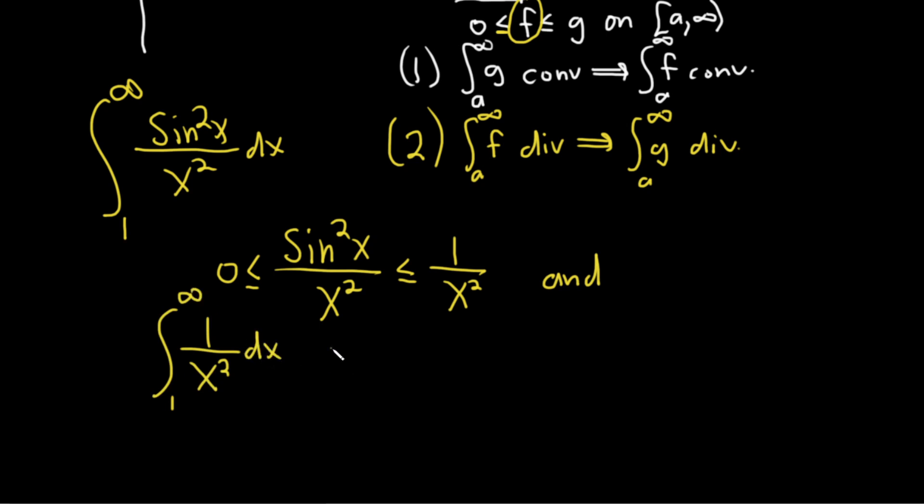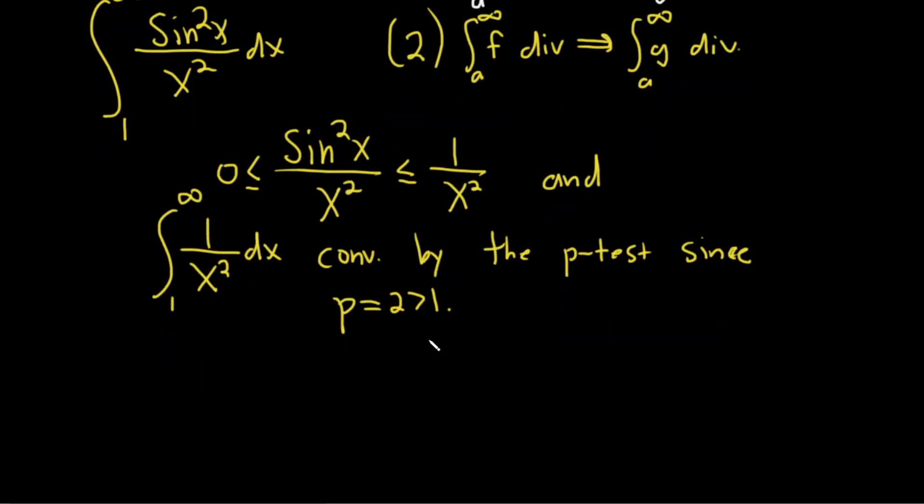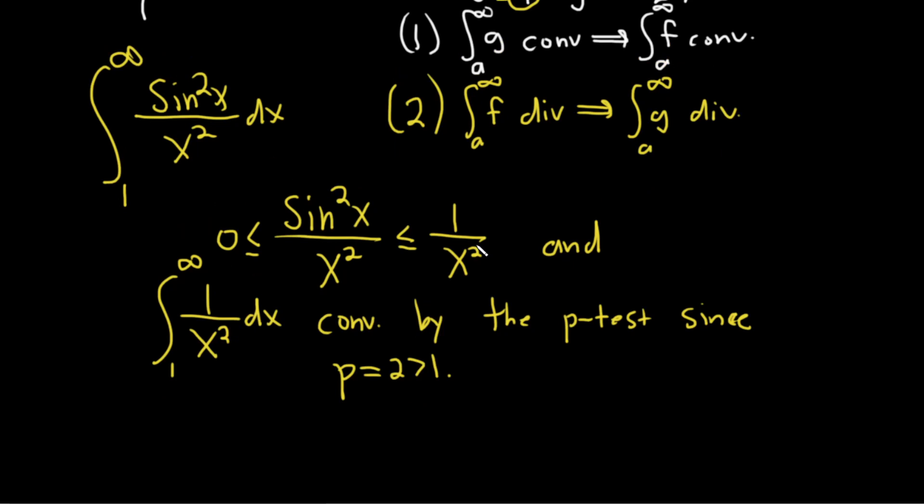And we know something about the improper integral of 1 over x squared. So we know that this improper integral from 1 to infinity, dx converges by the p-test, since p is 2, which is bigger than 1. Remember, it converges if p is bigger than 1 and diverges if p is less than or equal to 1.